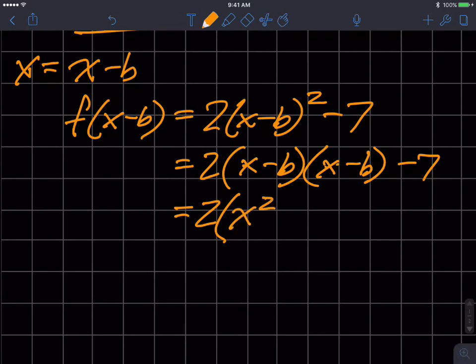x squared minus 2bx plus b squared. Sort that out. Hit pause and sort that out if you're not sure where those numbers come from. And now that you're back, if you had to pause, I'm going to distribute my 2.